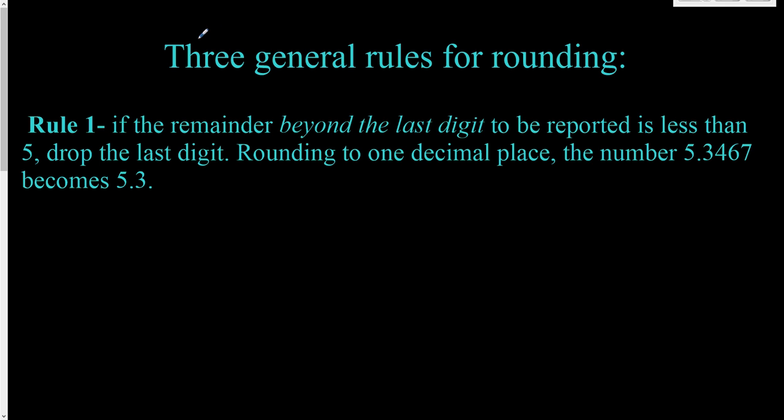Hello, and today we're going to look at rounding. I have set this up with three rules, and we'll look at the first one. Rule number one: if the remainder beyond the last digit to be reported is less than five, drop the last digit.